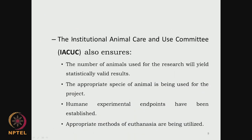Then there is another committee called the Institutional Animal Care and Use Committee, IACUC. They look at whether the number of animals is enough to yield statistically valid results — neither too many animals nor too few which would not be statistically significant — and whether the appropriate species of animal is being used for the project. For example, if you are talking about a cardiovascular stent, what type of animals? If you are looking at a joint, what type of animals? If you are looking at just cytotoxicity, what type of animals?